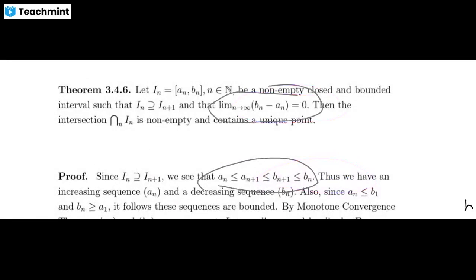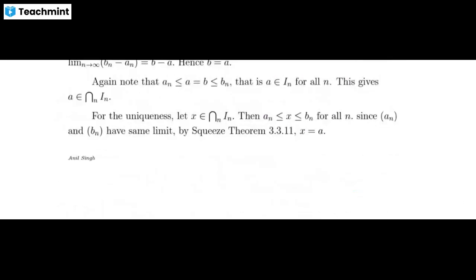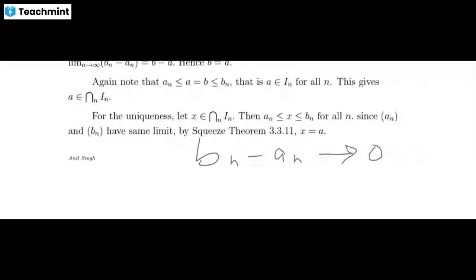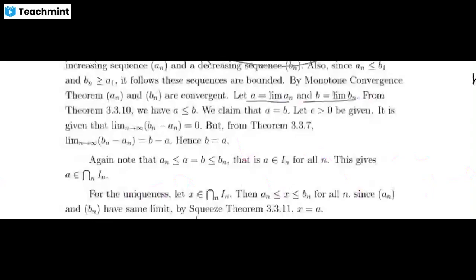To show a = b, we use the hypothesis that the lengths tend to zero: bₙ − aₙ → 0. Since {bₙ} and {aₙ} are both convergent, their difference converges to b − a. By uniqueness of limits, b − a = 0, hence b = a.